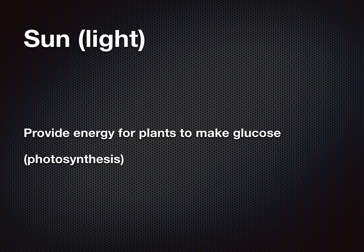The sun, also known as sunlight — you might want to put 'light' in that box with it. It provides energy for plants to make glucose, which you know from photosynthesis. The sun is the start of all things in an ecosystem; we would not be around without the sun. Even plants — the only thing they are dependent on is sunlight.